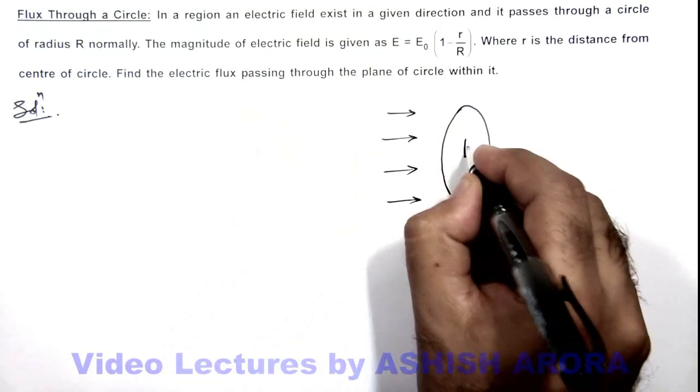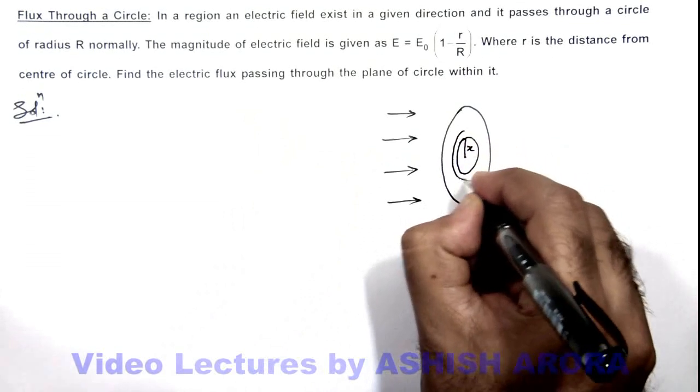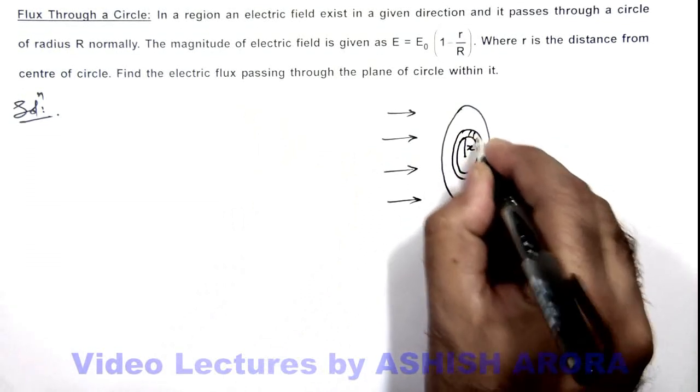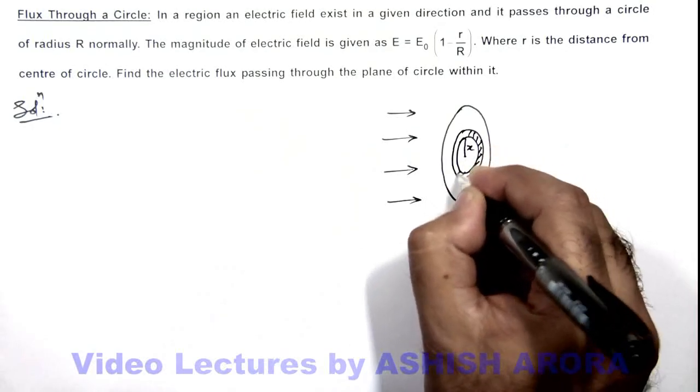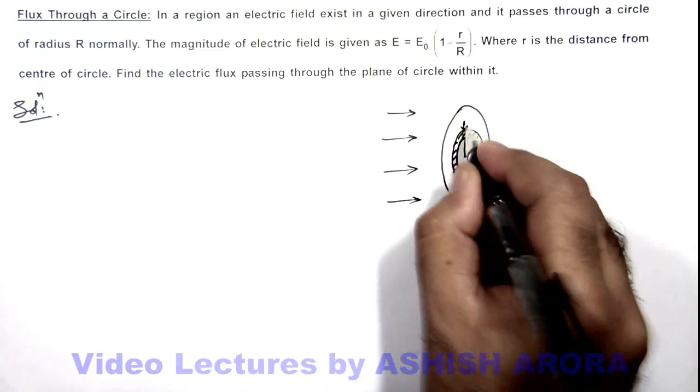Here we can consider an elemental ring of radius x, which is of width dx, and through this elemental ring we can consider that electric field does not vary as this dx is very small.